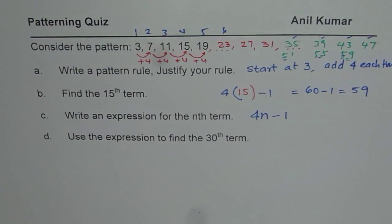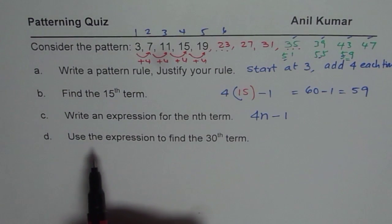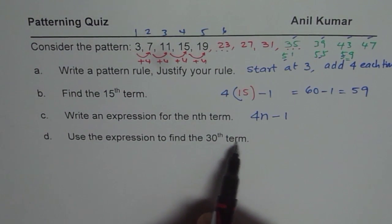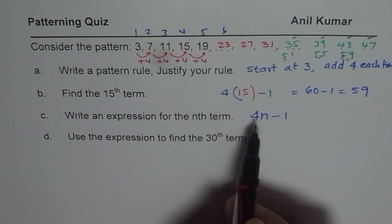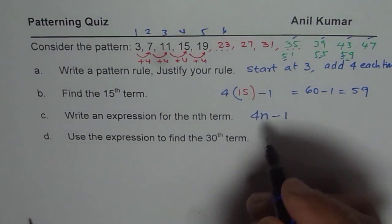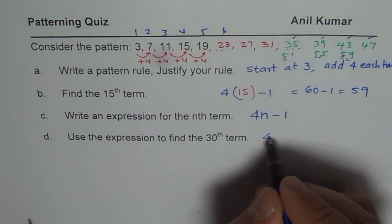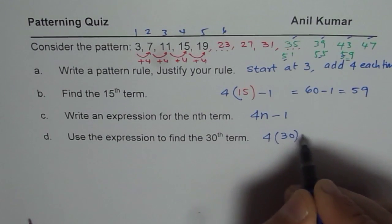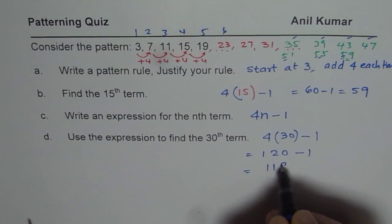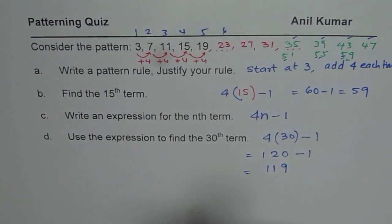The last part is, use the expression to find the 30th term. For the 30th term, don't double it, but go with your expression. So, it is 4 times, let us again calculate. It is 4 times 30 minus 1. 4 times 30 is 4 times 3 is 12, 120 minus 1. Take away 1 from 120 is 119. So, the 30th term should be 119.